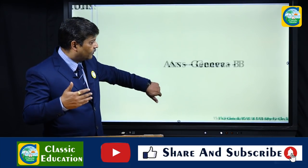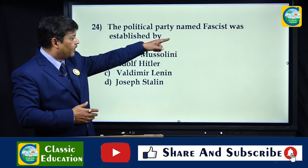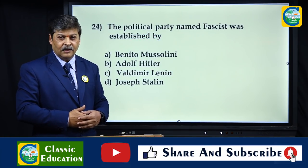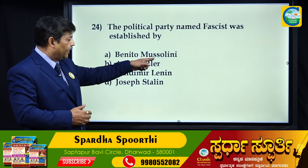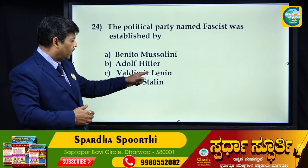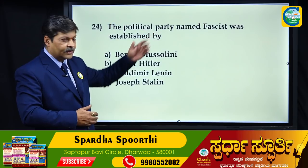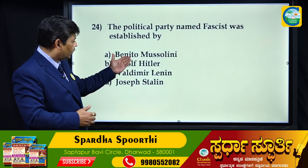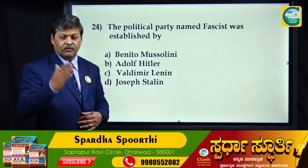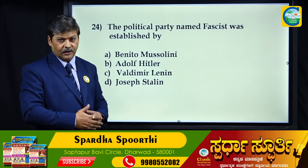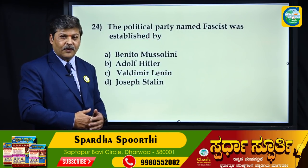The political party named Fascist was established by Benito Mussolini. Options include Benito Mussolini, Adolf Hitler, Vladimir Lenin, and Joseph Stalin. Benito Mussolini was the Italian dictator mainly responsible for the establishment of the Fascist party.